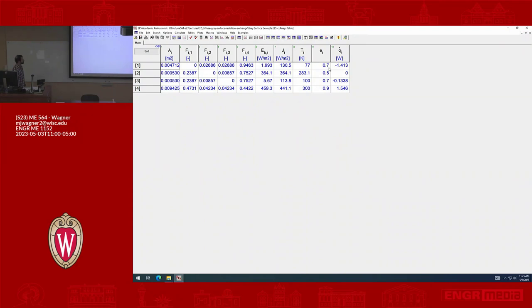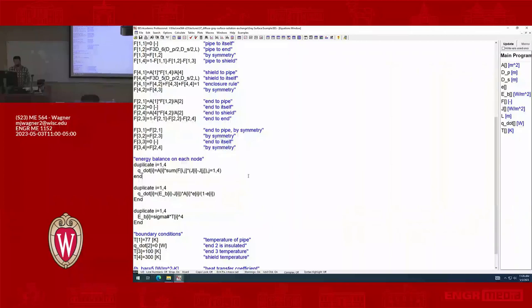It actually looks pretty similar to before in terms of what was going on. We're enforcing Q dot zero, but we're accounting for the fact that the surfaces are actually reflecting and interacting that way as well. I guess I went through that fast, but any questions on the EES setup for that or how you might do it in Python?